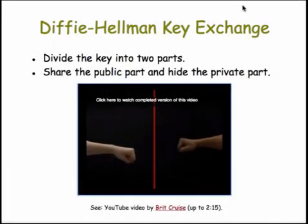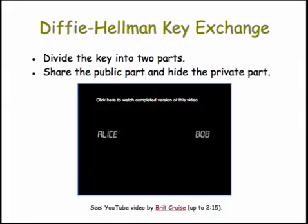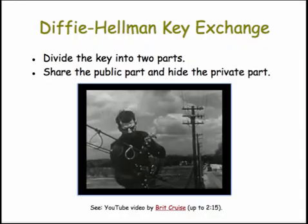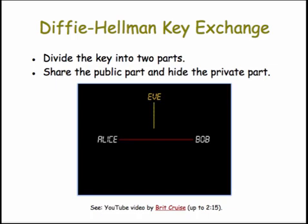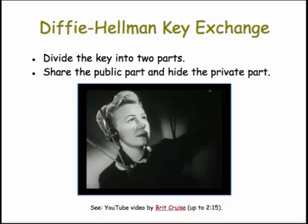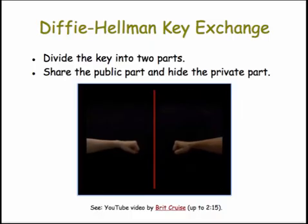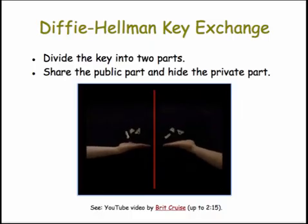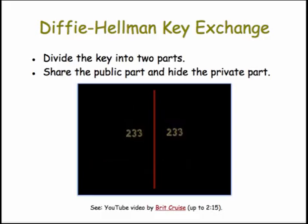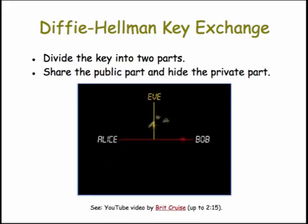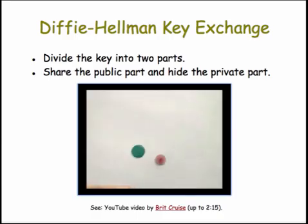Imagine two people who have never met could do an amazing trick. Alice and Bob are allowed to communicate over a line which is tapped, so any message they pass will be intercepted by Eve who is always listening. The trick is to agree on a secret numerical key without Eve also obtaining a copy. How is this possible? First, let's explore how this trick is done using colors.